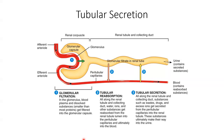Tubular secretion is the opposite of reabsorption — it takes waste products or excess ions from the blood and puts them into the filtrate to be excreted. Anything that stays in the renal tubules will be excreted as urine. Tubular secretion occurs all along the renal tubules, and substances secreted include hydrogen and potassium ions as well as any drugs taken. Tubular secretion functions to eliminate waste products and drugs from the body, and also helps regulate blood pH by adjusting the secretion of hydrogen ions.